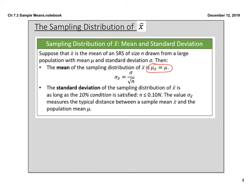The standard deviation is a little different. Just as it changed for proportions, it also changes for means. You take the standard deviation of the population and divide it by the square root of n — that's your standard deviation of the sampling distribution of means. The 10% condition must be met: your sample size must be less than 10% of the population in order to use this equation.